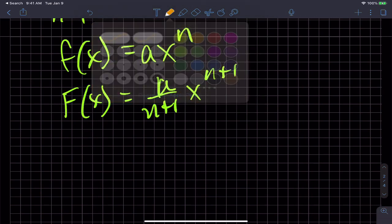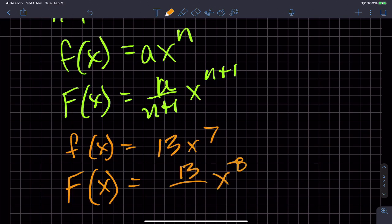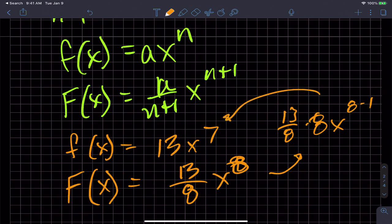So if the example would be, if my original function was 13x to the seventh, then my antiderivative going backwards to the higher exponent function would be x to the eighth, 13 over eight. Why? Because if I take the derivative of this, it would be 13 over eight times eight x to the eight minus one, which is just that. So think of it as I'm having to go backwards and compensating.